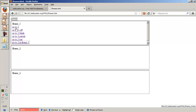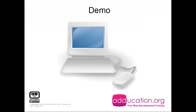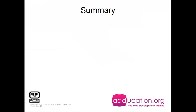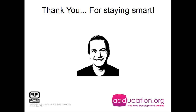So, what we saw was that the target attribute can be important and handy, and then we have the separate target values. This was D'Andreas for Education.org — I want to thank you for staying smart.